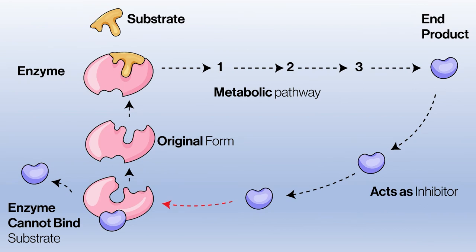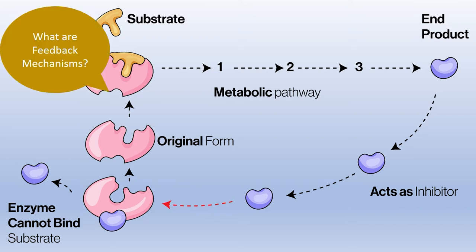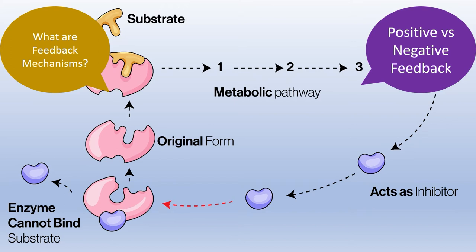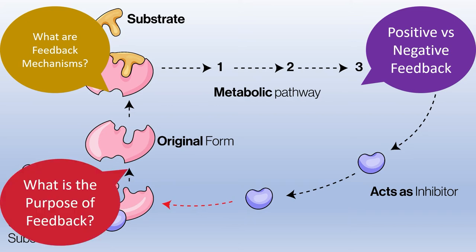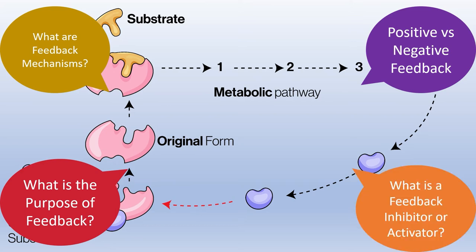Cells use many different feedback mechanisms. Cells receive both positive and negative feedback on a regular basis. Certain feedback mechanisms are there to promote beneficial responses, while other feedback mechanisms are in place to stop certain cellular pathways from overproducing important substances.